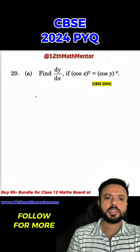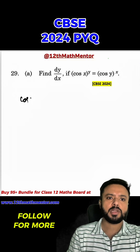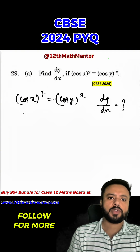Differentiation is a super tricky question from the CBSE 2024 Class 12 Maths Board exam. In this question, we have been given cos x raised to the power y equals to cos y raised to the power x, and we have to find dy upon dx.